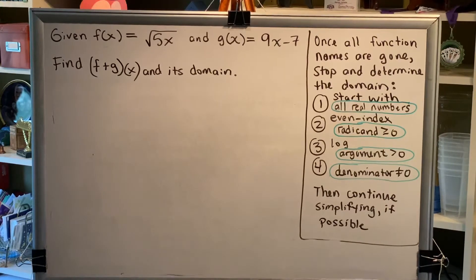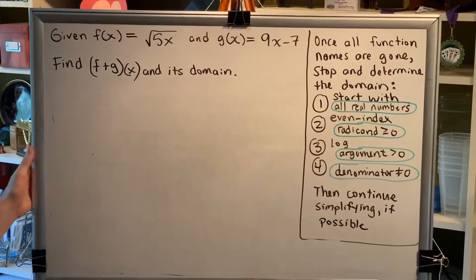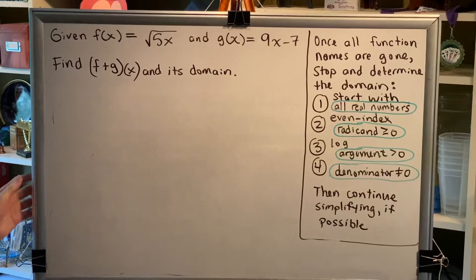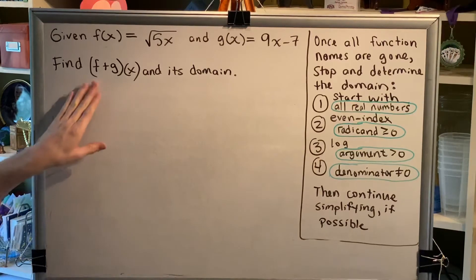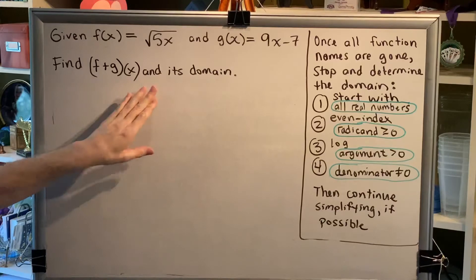It's time for you to solve a problem. Given f of x equals the principal square root of 5x, and g of x equals 9x minus 7, find f plus g of x and its domain.